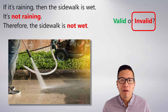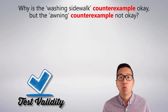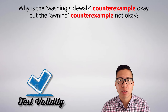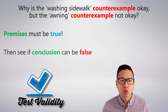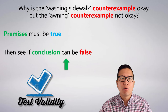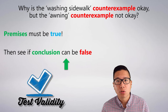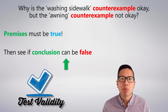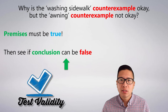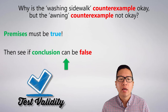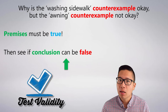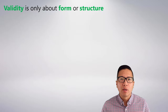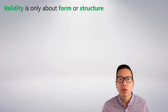You might be thinking I've pulled something fishy here. Why did the 'washing the sidewalk' counterexample work and show the argument is invalid, but the awning counterexample somehow didn't? The answer is all about keeping the premises true. When I invoked washing the sidewalk, that didn't render any of the premises false — it's still the case that if it rains the sidewalk gets wet, and it's not raining. But the problem with the awning counterexample is that by invoking it, I made at least one premise false, and you can't do that. The test for validity is always the same: make the premises true, force them to be true, and then see if the conclusion can be false. A valid argument essentially preserves truth — if the premises are true, it confers that truth down to the conclusion.